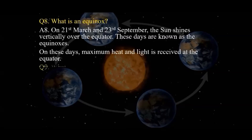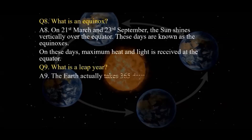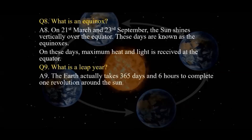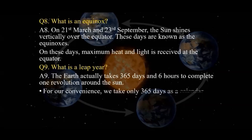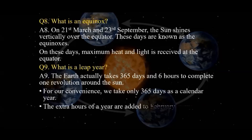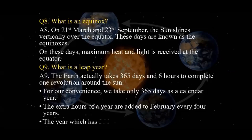What is a leap year? The Earth actually takes 365 days and 6 hours to complete one revolution around the Sun. For convenience, we only take 365 days as a calendar year. The extra 6 hours of each year are added to February every 4 years, and the year which has 366 days is known as a leap year.